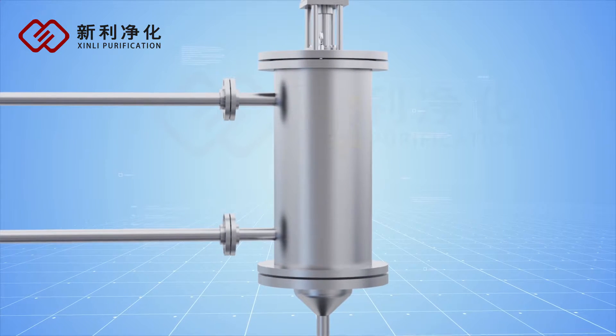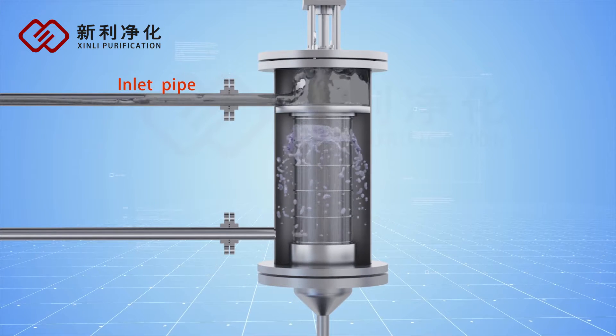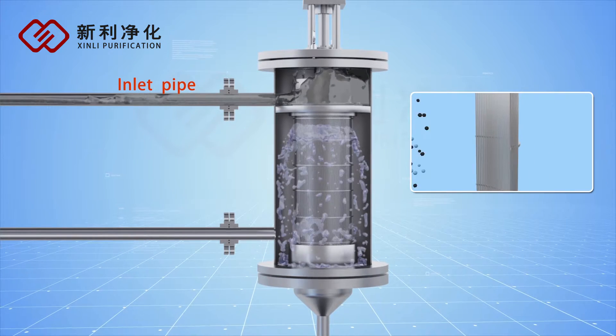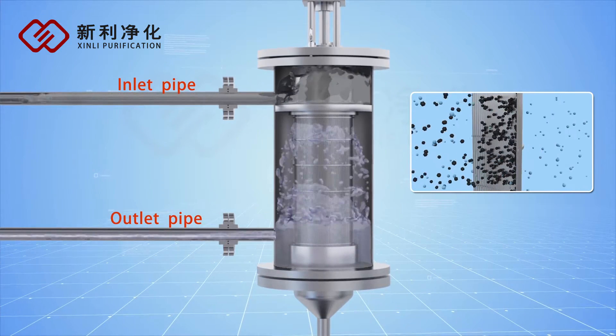The unprocessed liquid flows into the filter cartridge interior from the inlet. The impurities are trapped on the inside surface. Clear liquid flows out from the outlet.